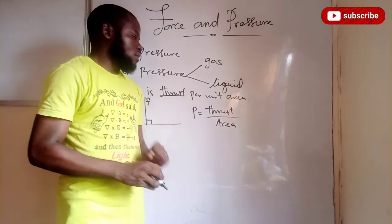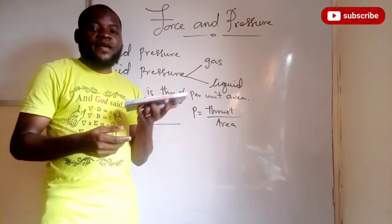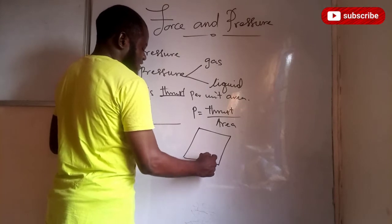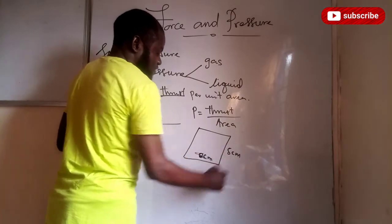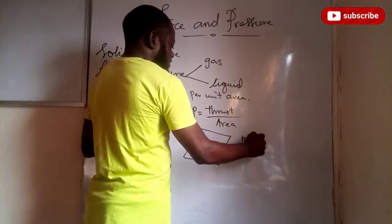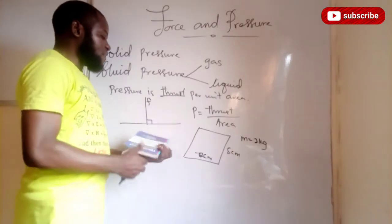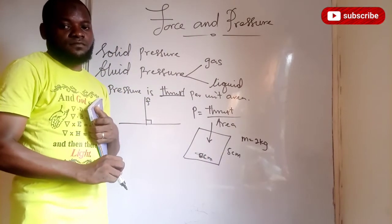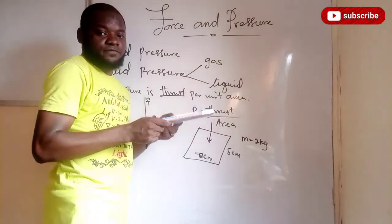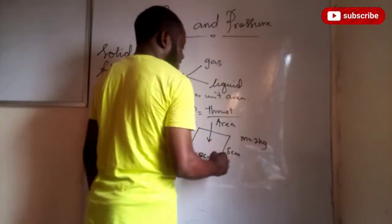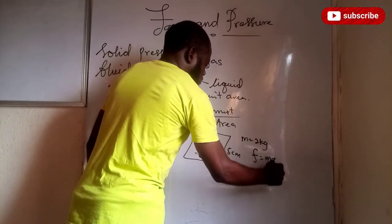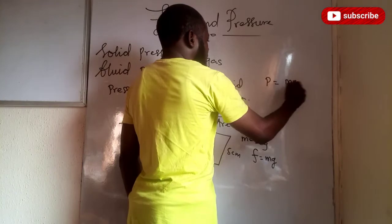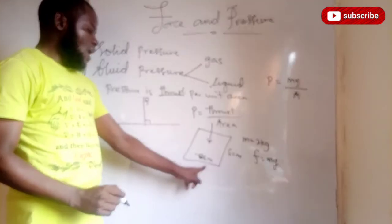Now let's take for instance that I have this book with dimensions of 2 centimeters by 5 centimeters. If the mass of this book is 2 kilograms and I drop this book on a table, the book is going to exert a force perpendicular to that table. That force is equivalent to the weight of this book, so the thrust on this book equals the weight of the book, given as F equals mg. If I want to know the pressure this book exerts on that table, then pressure equals mg divided by the area.